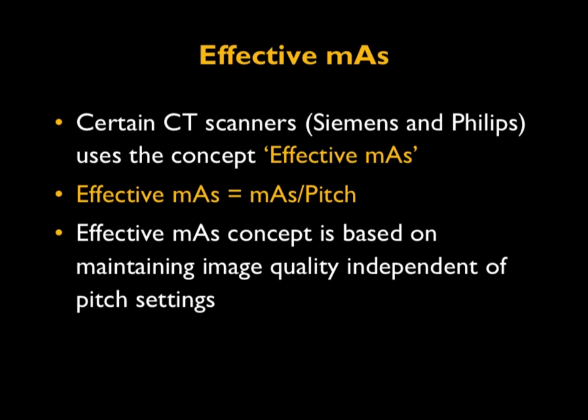Along with pitch, there is a concept called effective MAS used in certain CT scanners — namely Siemens and Philips. They define effective MAS as the ratio of MAS divided by pitch. This concept is based on maintaining image quality independent of the pitch setting, so the scanner automatically changes the MAS based on the pitch value to keep the effective MAS constant.